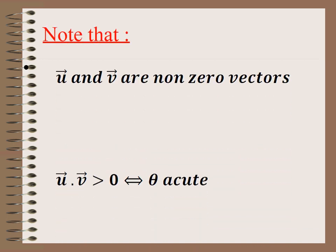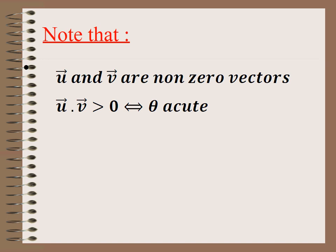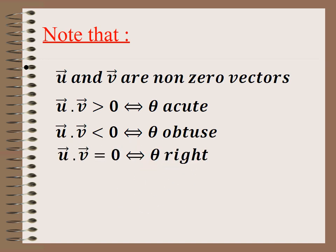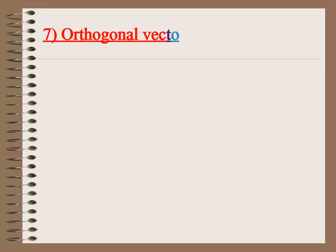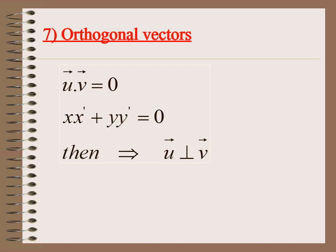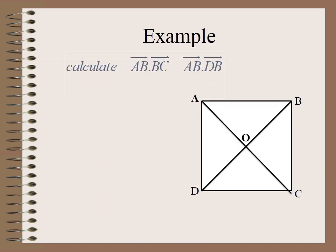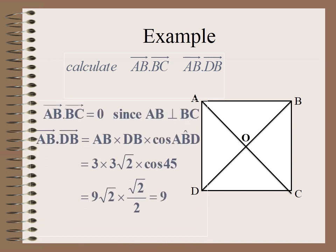We must know the sign of the dot product: if the dot product is greater than zero, the angle is acute; if less than zero, the angle is obtuse; if exactly zero, the angle is right. For orthogonal vectors, two vectors are orthogonal if their dot product equals zero, i.e., xx' + yy' = 0. For example, AB·BC = 0 since AB and BC are perpendicular. But AB·DB ≠ 0 because the angle between them is 45° (in a square), giving a dot product of 9.